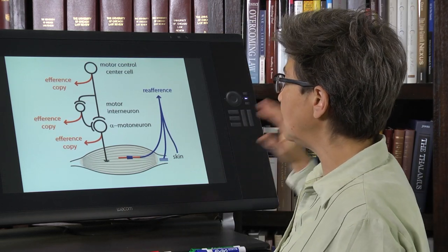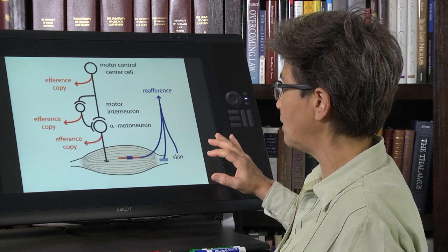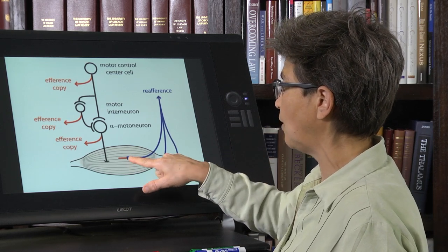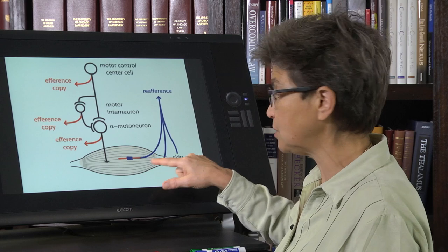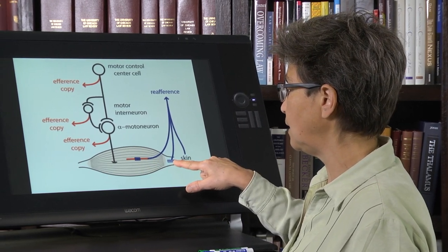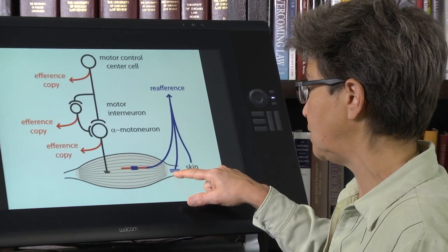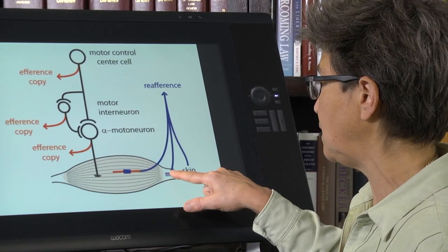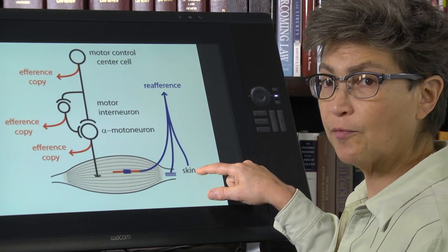So how do we get information about the actual movement? Well, we get it from our various muscle afferents, both the spindles and the 1B, the Golgi tendon organs. So 1A and 1B afferents, and also from skin.